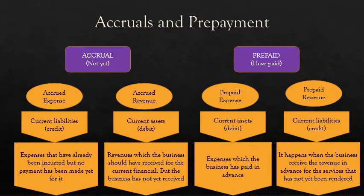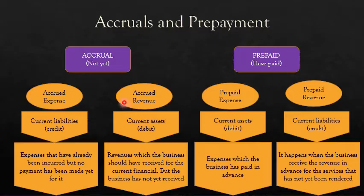So what are accruals and prepayments? We have two types: accrual and prepaid. The word 'accrual' means 'not yet' or 'haven't yet.' So if the item is an accrued expense, it is not yet paid. If the item is accrued revenue, then it is not yet received — we should have received it but haven't yet. That's what the word 'accruals' means: something has not yet happened.